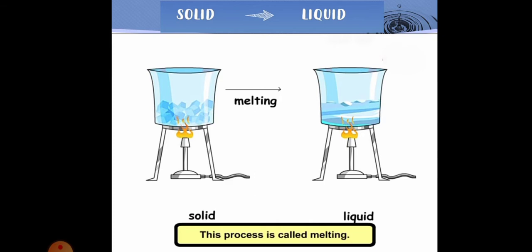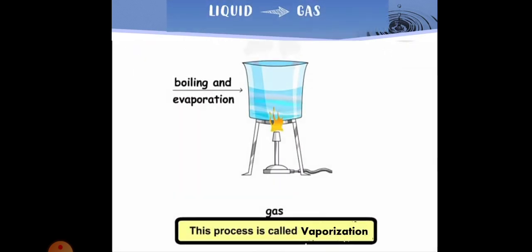Ice is a solid which, on heating, melts into liquid — that is water. When you take out an ice cube from the freezer and leave it at room temperature, you will see that the ice starts to melt into water. So the process by which a solid changes into a liquid is called melting.